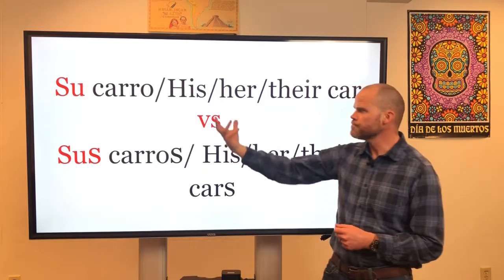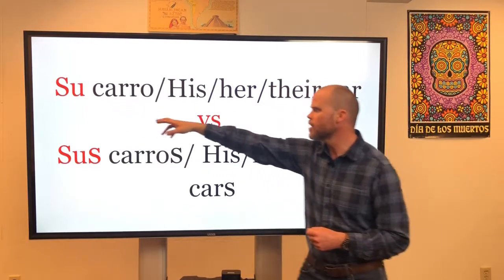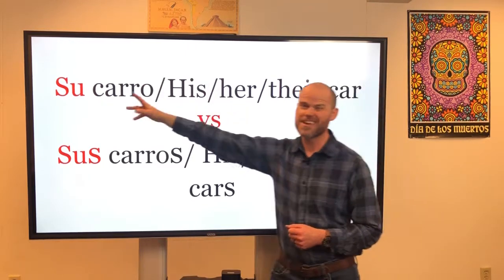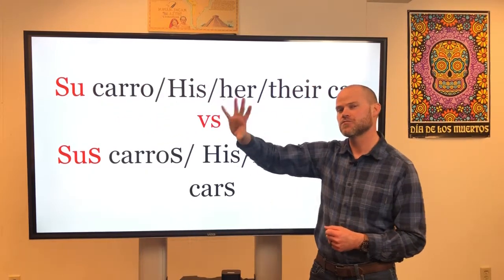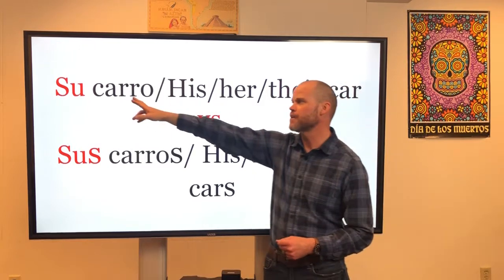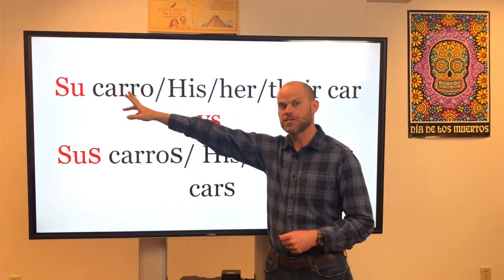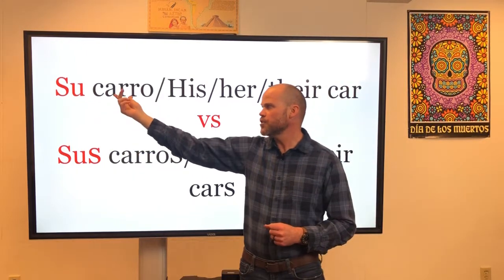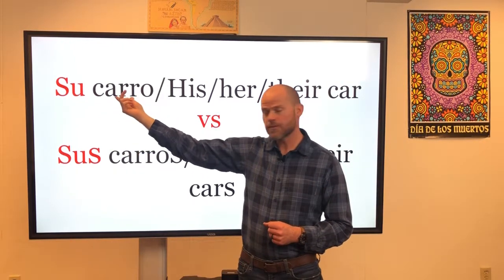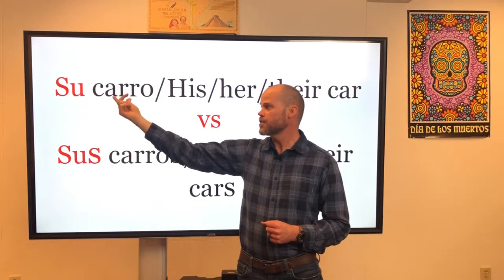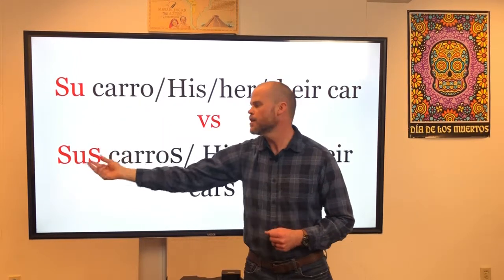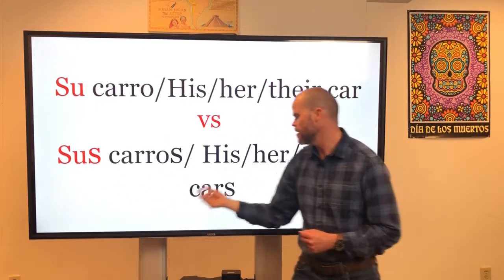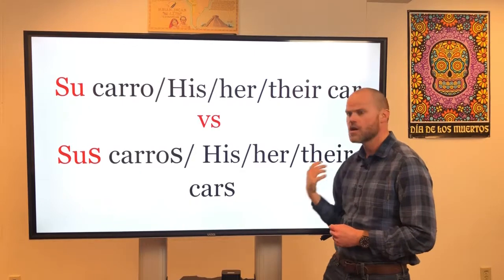So here we have the third person form. Su carro can be either "his car," "her car," or "their car." It can be a bit ambiguous. That's why it's really important to specify who is possessing the object in your sentences when you write in Spanish. What happens when we change carro to carros? We have to change the possessive adjective, so it becomes sus carros — "his, her, or their cars."